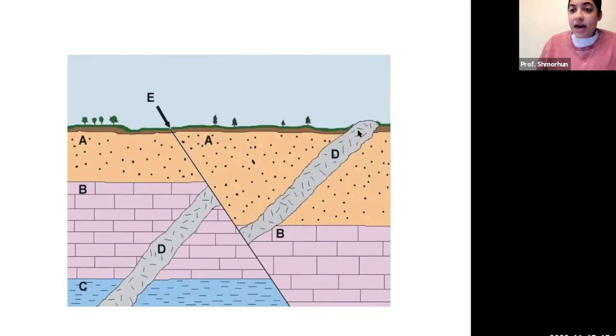We also have this feature cutting across the screen which is labeled D. That's a very good example of an intrusive feature - an igneous dike. Then we have E, which points to a line showing an offset of some of these planar horizontal beds.